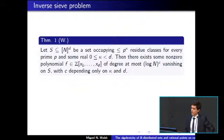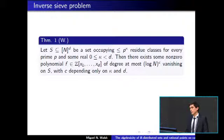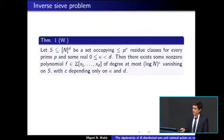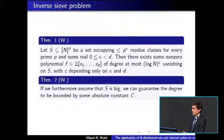This result is actually optimal, because as mentioned before, there are examples of sets that are the solution set of polynomials of degree a power of log n that are badly distributed. By this result we know that this is the only way a set can be badly distributed. The main problem with this result is that even a power of a logarithm is a rather small degree. In many applications you really want to have a uniform bound on the degree of the polynomial. But if you place one additional assumption — that your set is also big — then you can guarantee that the polynomial has degree bounded by an absolute constant.